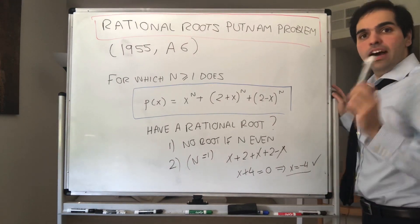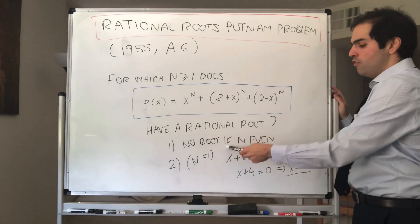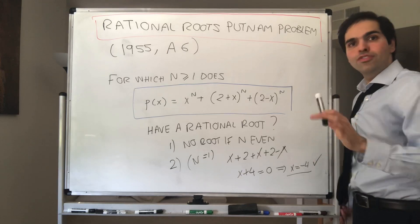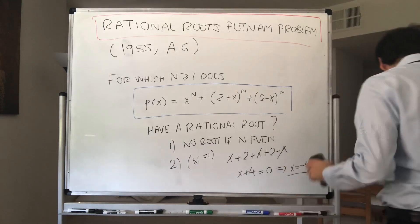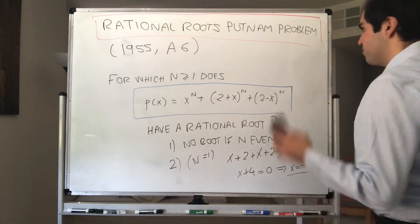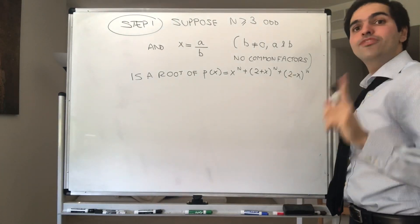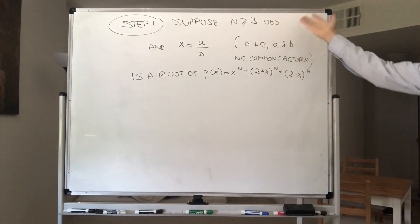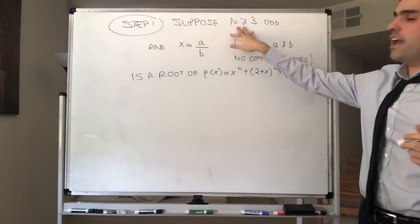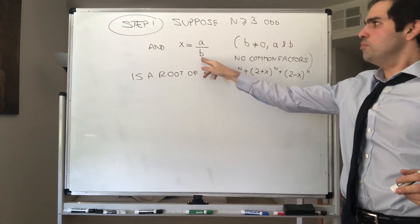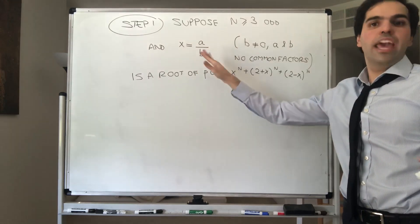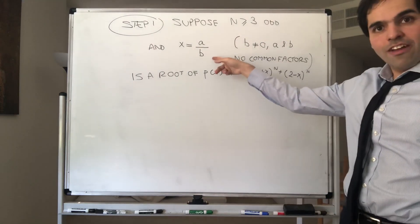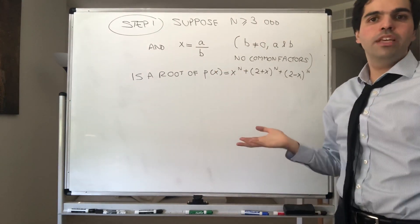I want to show that this is basically the only case. In other words, it has a rational root if and only if n equals 1. So for now, assume that n is odd and greater or equal to 3 — the first odd number bigger than 1. And you'll see, surprisingly, the proof is very similar to the proof that square root of 2 is irrational. So just like that proof, suppose n is odd and greater or equal to 3, and suppose that x equals a over b is a rational root of our polynomial. Without loss of generality, you can assume that a and b have no common factors — if we had 2 over 4, you could just simplify this to 1 over 2.